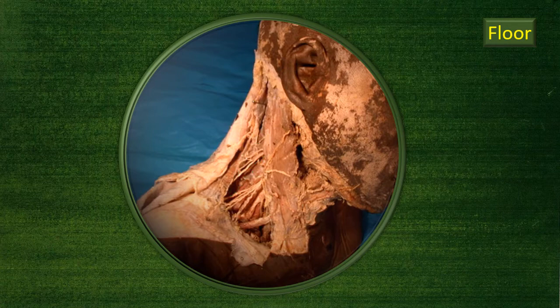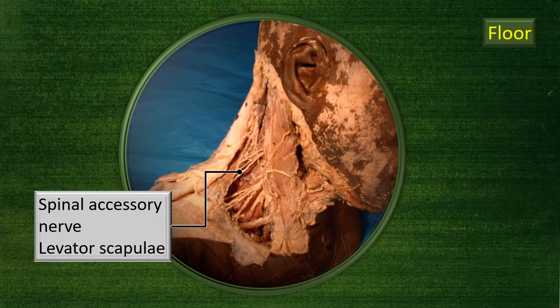Now looking at the structures in the floor: the flashing green animation indicates the spinal accessory nerve, and the brown structure immediately behind it is the levator scapulae muscle.